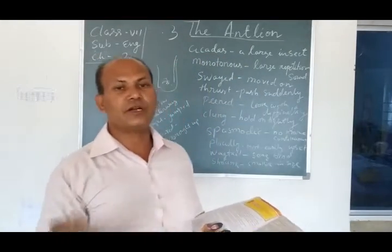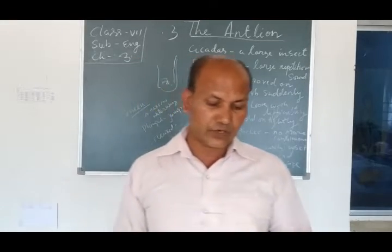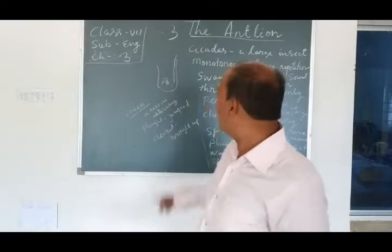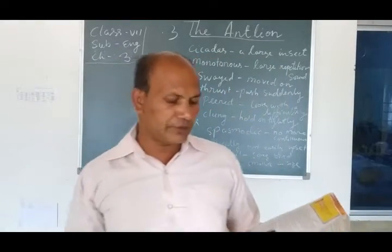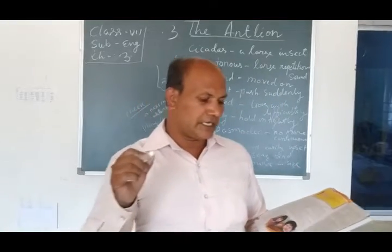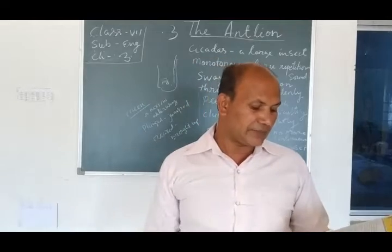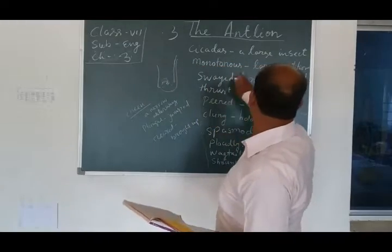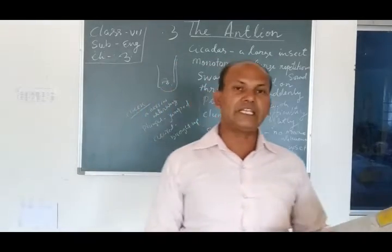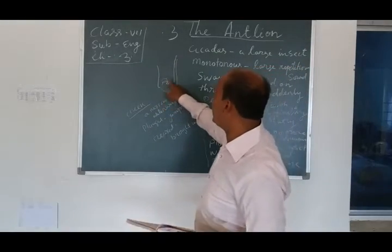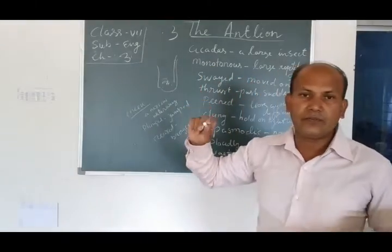Now let us see the scenery at the time and how things were going on. The hot shadow of the tree moved across and across — 'hot shadow' means it is very afternoon time. The cicadas, one of the large insects called 'jhinghur' in Hindi, filled the afternoon with their monotonous shrill. Monotonous means repetitious — a large, repetitious sound. The battle swayed, meaning the battle between the ant lion and the red ant moved on.